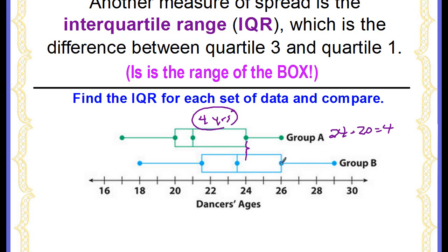Let's look at group B. The highest value of our box, of the IQR, is 26, subtract the lowest which is the left side, and that looks to be about 21 and a half. So if we subtract the two we get four and a half. So the IQR, or the spread of the middle part of the data, the middle 50%, is 4.5 years.